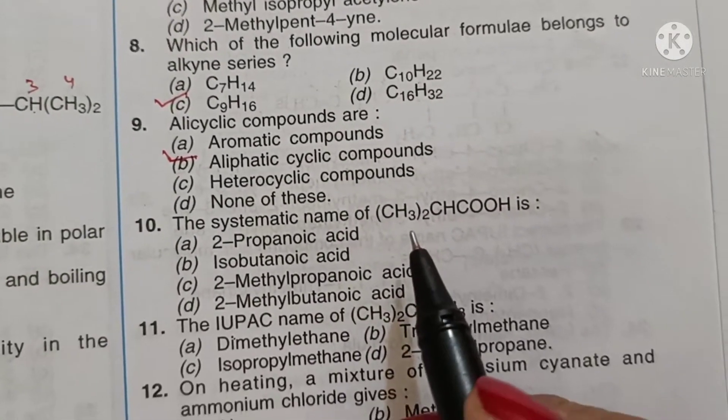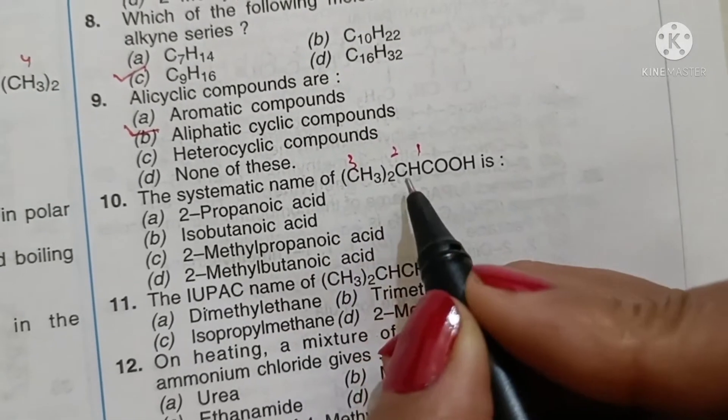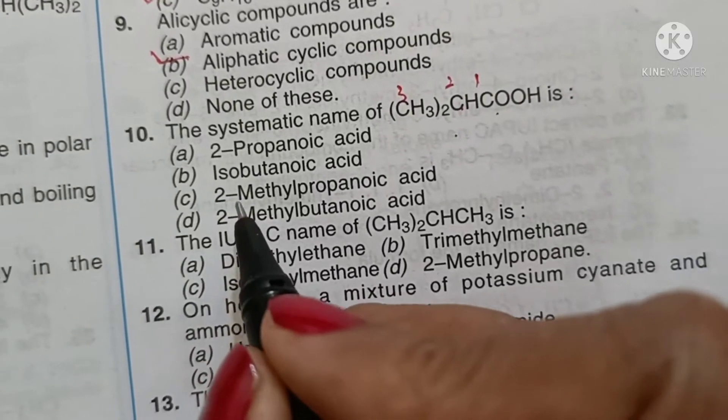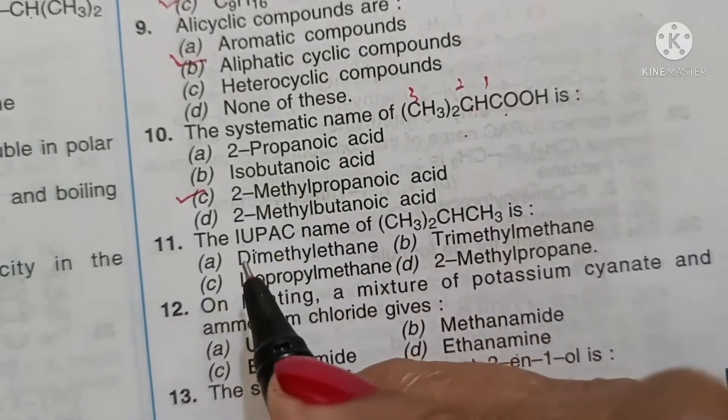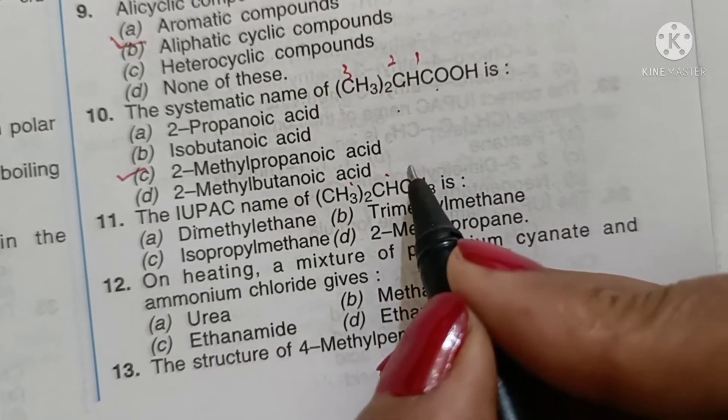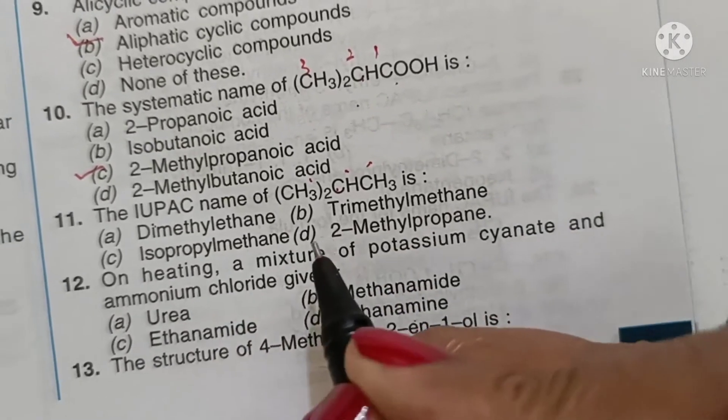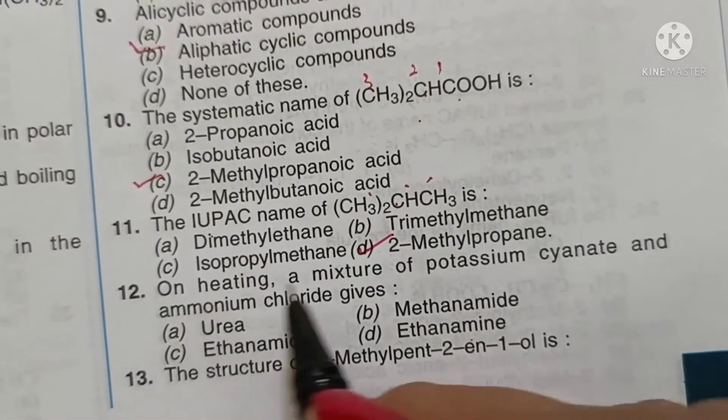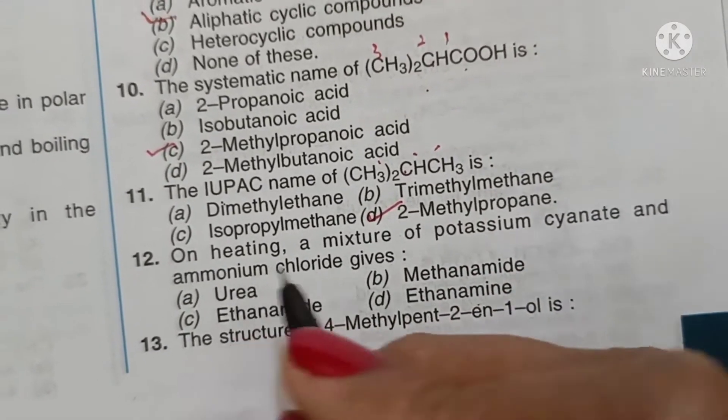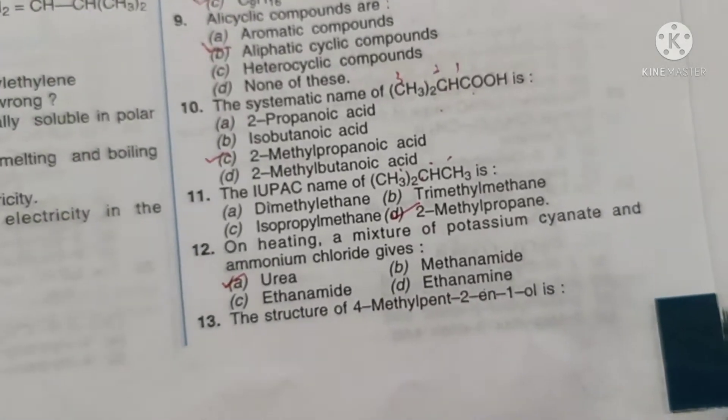Systematic name of this compound is 1, 2, 3 - so 2-methylpropanoic acid, option C. IUPAC name of this compound will be 1, 2, 3 - so 2-methylpropanoic acid, option D. On heating a mixture of potassium cyanate and ammonium chloride, ammonium cyanate is formed which later on rearranges to urea, option E.